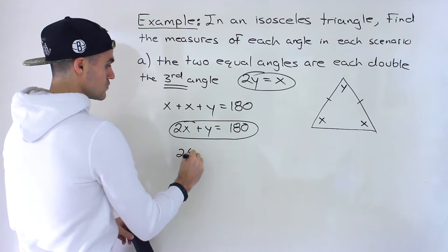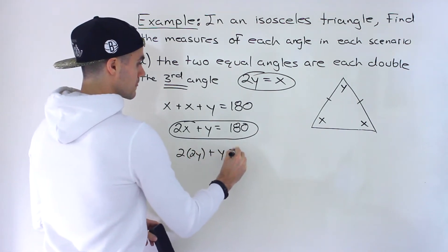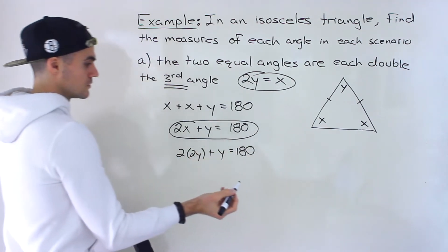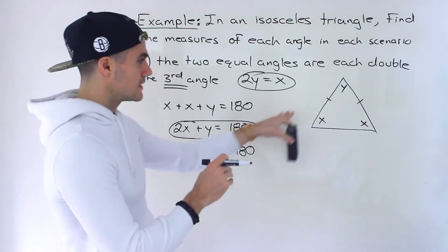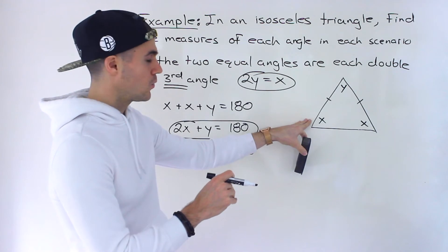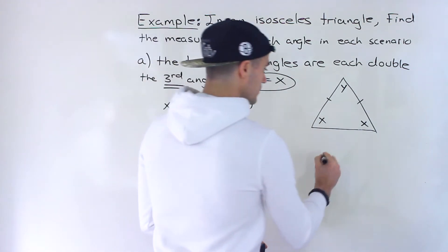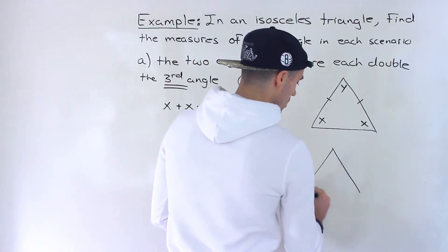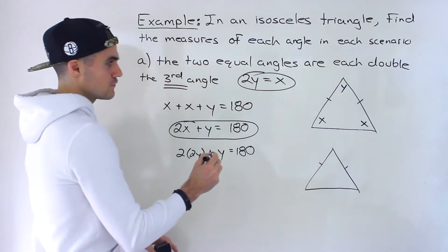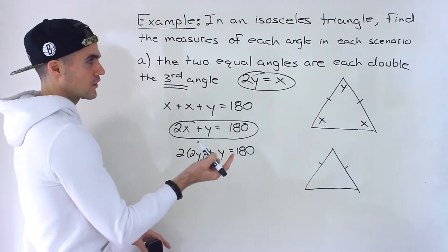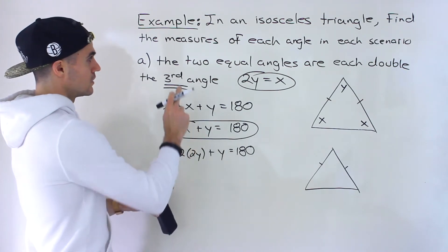I'm going to use substitution since x is already nicely isolated. So we plug in 2y for x, giving us 2 times 2y plus y equals 180. Alternatively, if you don't want to deal with two variables, you can try to draw the triangle in terms of one variable.